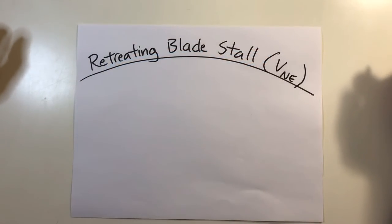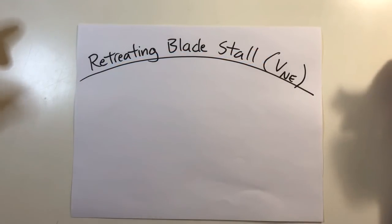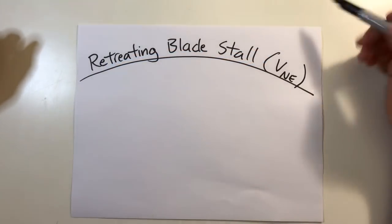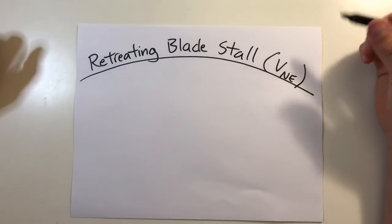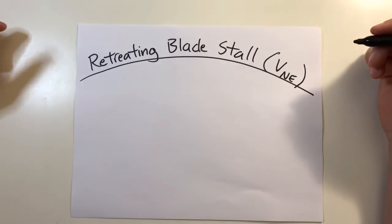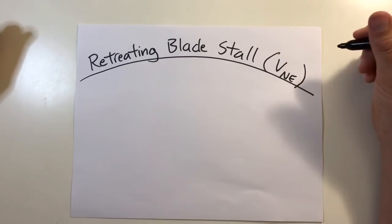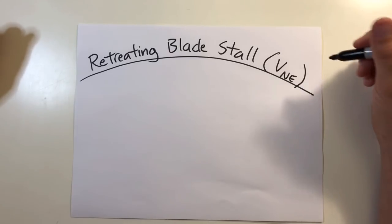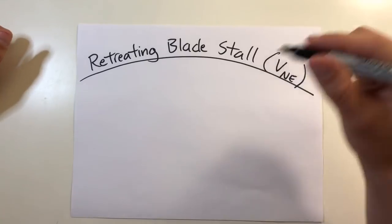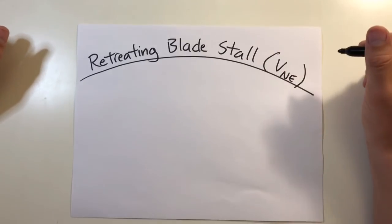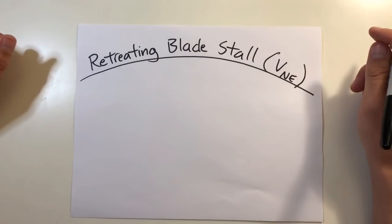Welcome back to Helicopter Lessons in 10 Minutes or Less. I'm Jacob and today we're talking about Retreating Blade Stall and VNE. I'll kind of segue into this video from my last one called Dissymmetry of Lift Expanded, where I explain the different aerodynamic regions of the rotor disc. I'd recommend checking out that video first because this video builds directly off the previous one. So let's get started.